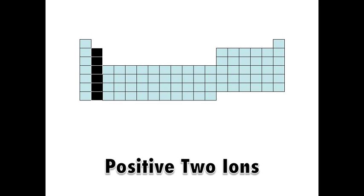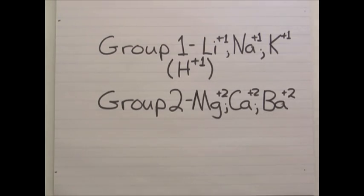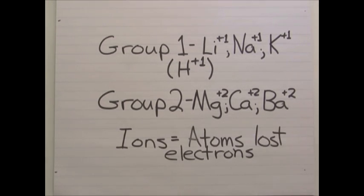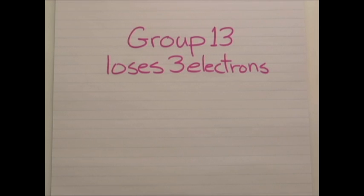Let's look at positive 2 ions. These would include metals as well, such as magnesium, calcium, barium, all plus 2. Let's not forget that these cations are atoms that have lost electrons. Let's look at positive 3 ions, flipping across the periodic table to group 13. They lose 3 electrons. Most typical of these would be aluminum ion plus 3.